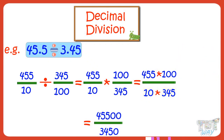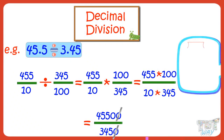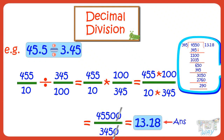Divide the product of numerators by the product of denominators. You can shorten the numbers by cutting the same number of zeros from numerator and denominator. Now you can divide 4550 by 345, and you'll get 13.18. So 13.18 is our answer.